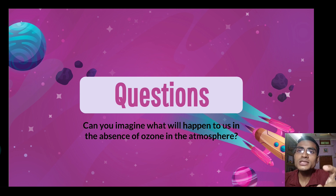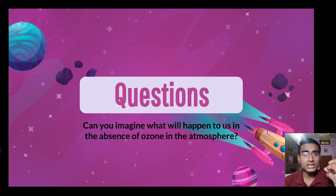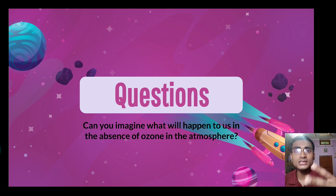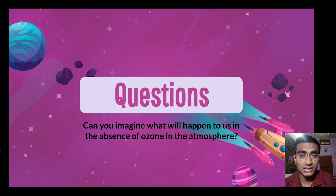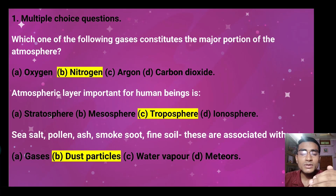Can you imagine what will happen in the absence of ozone in the atmosphere? If the ozone layer is absent, UV radiation will directly reach Earth, which will cause many diseases — skin cancer, skin problems, and other conditions. The absence of ozone would cause a lot of harm. Chlorofluorocarbons and greenhouse gases are also responsible for ozone layer depletion.